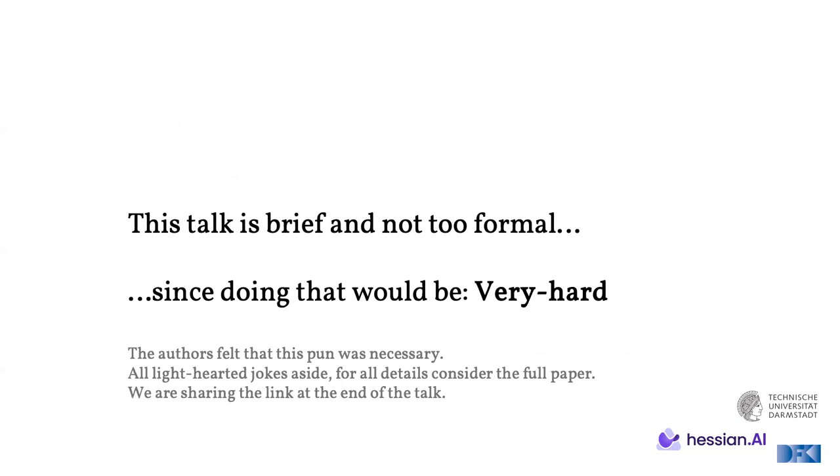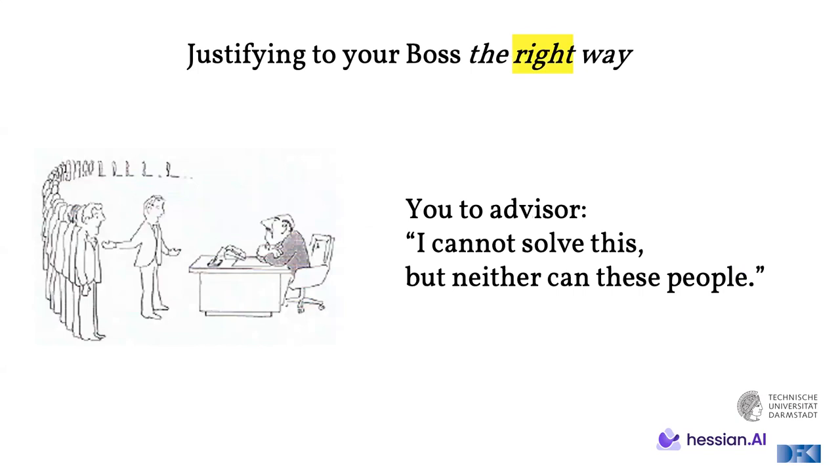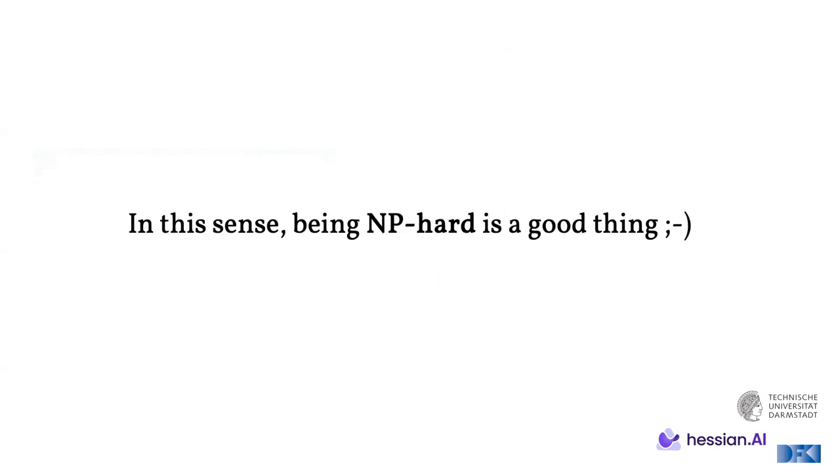This talk is brief and not too formal. Since then, doing that will be very hard. All lighthearted jokes aside, for all details, please consider the full paper. We are going to share the link at the end of this talk. So, consider the situation that you're facing a problem and you're not able to solve it. How do you justify to your boss? This is going to explain a bit of the intuition for readers unfamiliar with complexity classes. So, the bad way of doing it essentially would be to just say, well, I cannot solve this. And the boss might conclude, well, you're too dumb. The right way of doing this is by pointing to all the other people who are also not able to do it. And so, in this sense, being NP hard is a good thing because it's not just you that cannot solve it. It's a general hard problem.